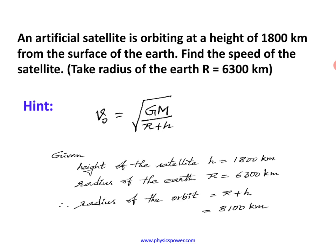If you take the given data: height h is 800 km, radius of the earth 6300 km, so total 8100 km — that is the radius of the orbit. In this formula, the r + h value is known, but GM they did not give.